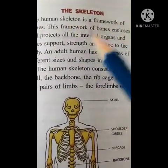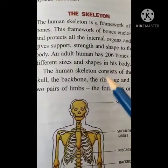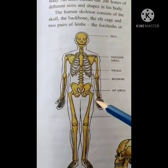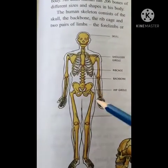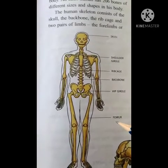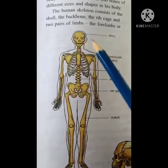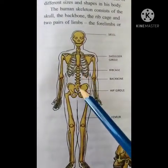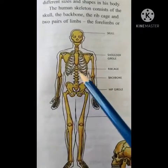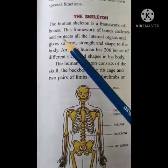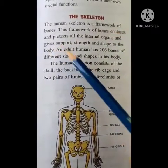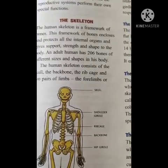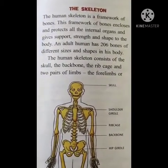Our lesson is about the skeletal system. This is the skeleton — you can see the skeletal system. This is the largest bone in our body, that is the femur. This is the skull, this is the shoulder girdle, this is the hip girdle, this is the backbone — it has 33 bones — and this is the rib cage. The human skeleton is a framework of bones. This framework encloses and protects all the internal organs and gives support, strength and shape to the body.